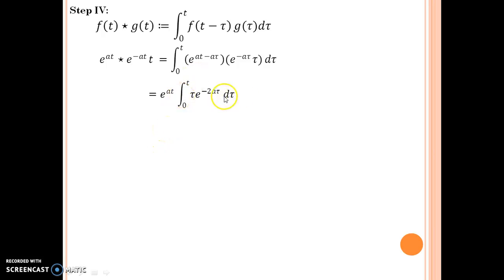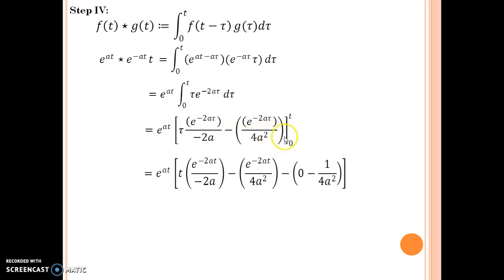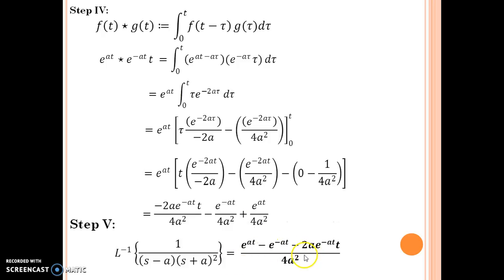When we integrate it further using uv rule of integration or Leibniz's rule of integration, we obtain this as the answer. Use carefully the brackets and minus sign and everything. Plug in the limits. When you plug in the lower limit, put a minus sign and then put a bracket. Carefully simplify it, you get this as the answer and at step 5, you obtain your final answer. So this is your final answer e to the power a t minus e to the power minus a t minus 2a e to the power minus a t times t over 4a square.